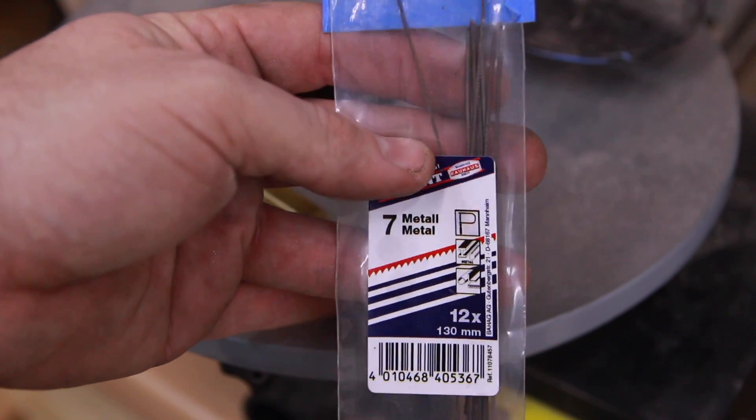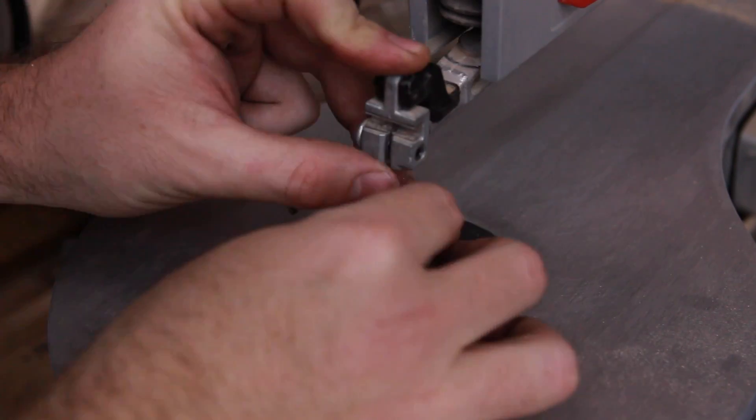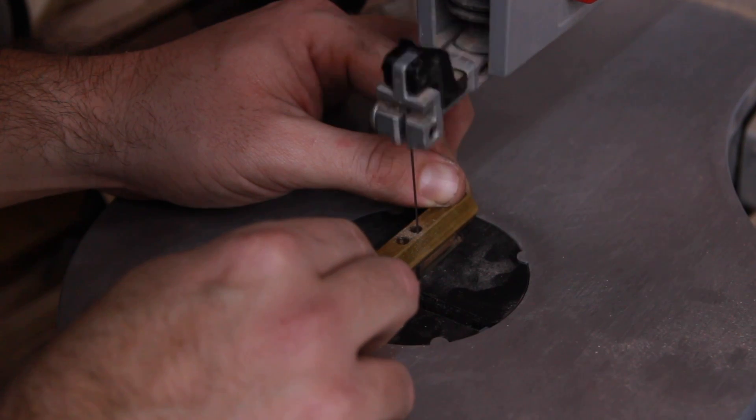After drilling two holes, the waste was cut on the scroll saw using metal blade, but the normal wood blade worked better at the end.